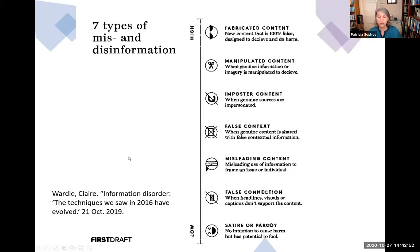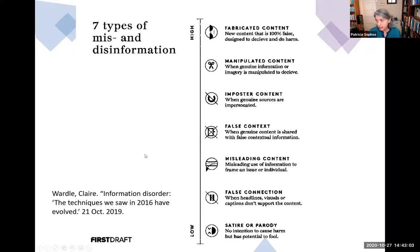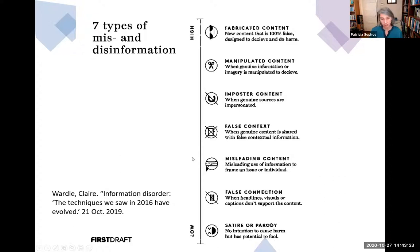Claire Wardle is a scholar who recommends against using the phrase fake news. She recommends three nuanced definitions. This precision can be helpful when evaluating content for reliability. The low-to-high spectrum characterizes the degree of intent to deceive. For example, satire or parody has no intention to cause harm but has the potential to fool. In contrast, at the high end of intent to deceive is fabricated content — new content that is 100% false, designed to deceive and do harm.